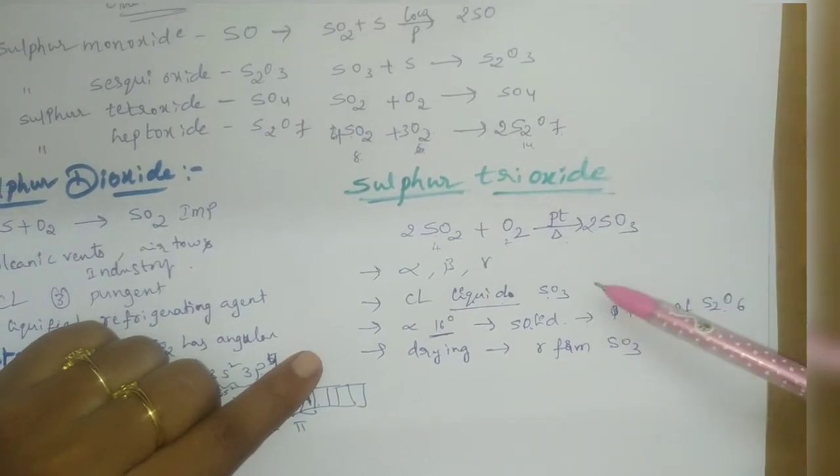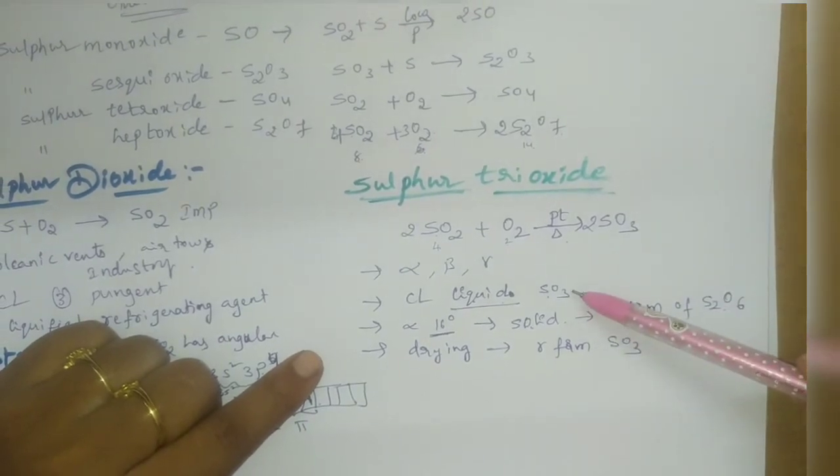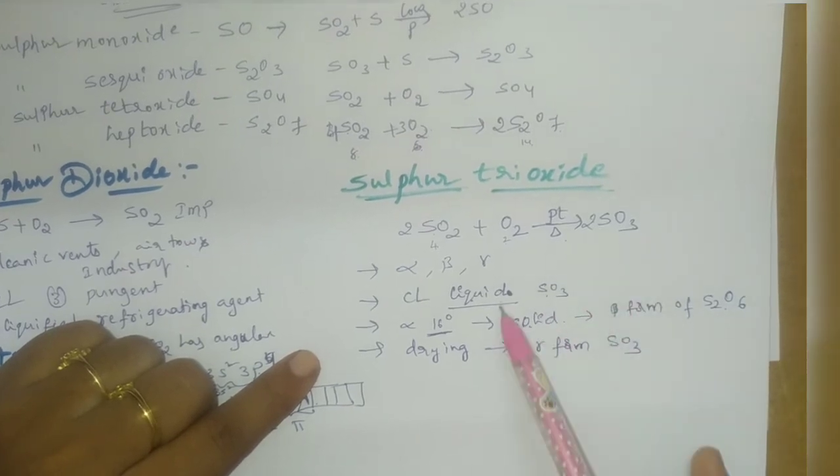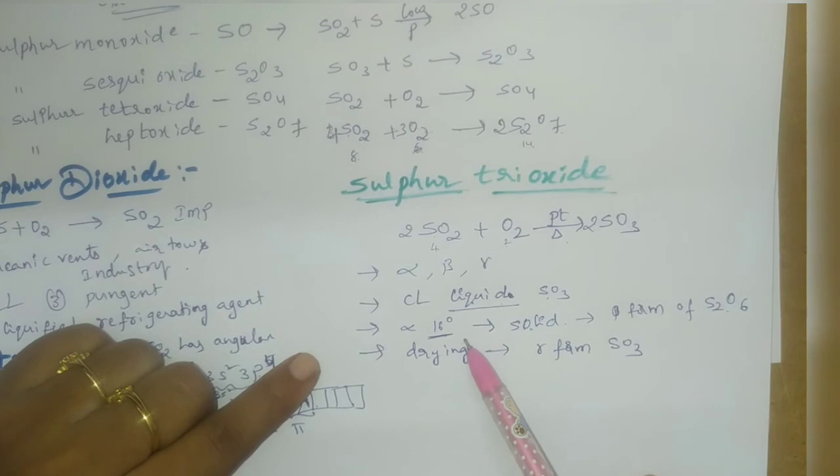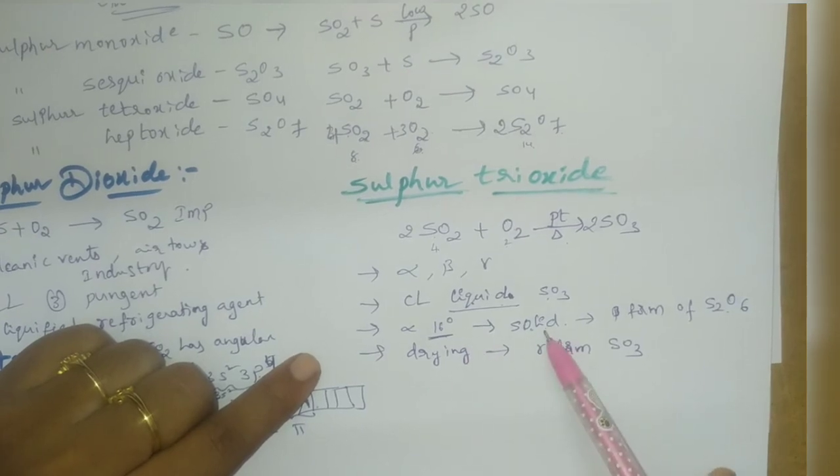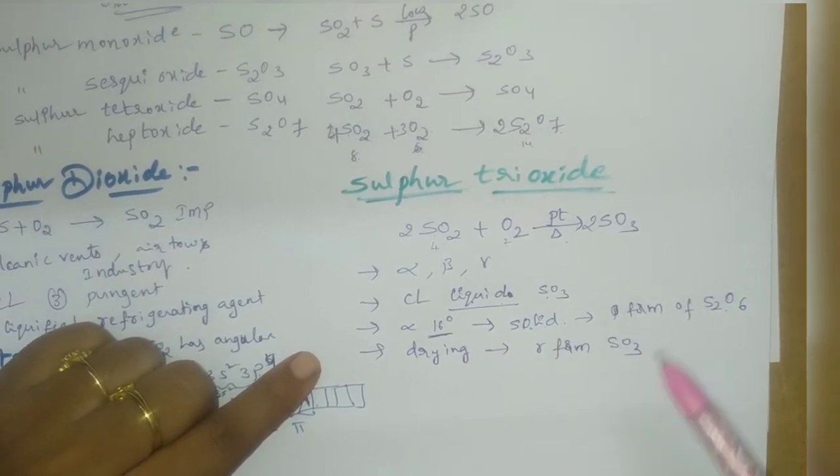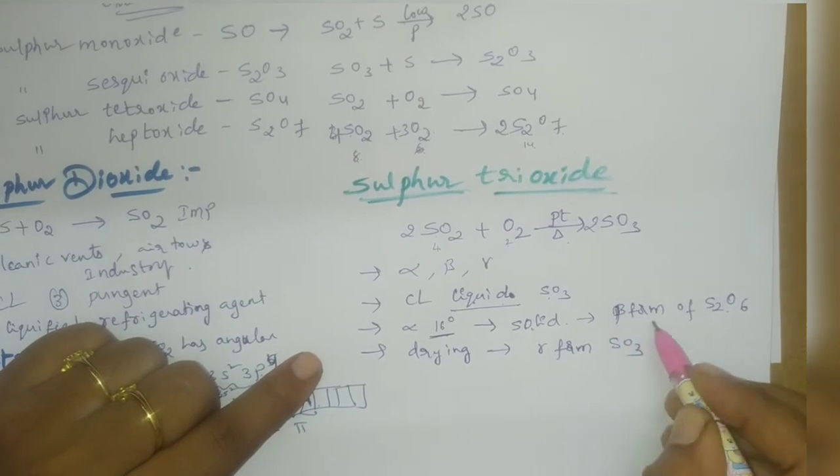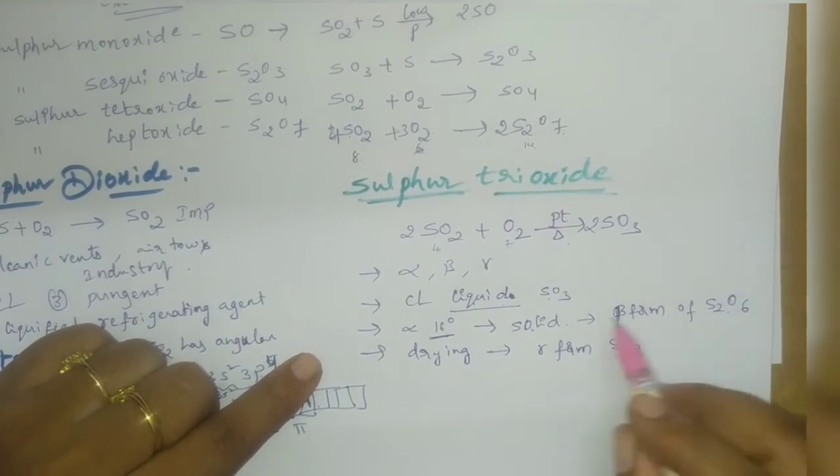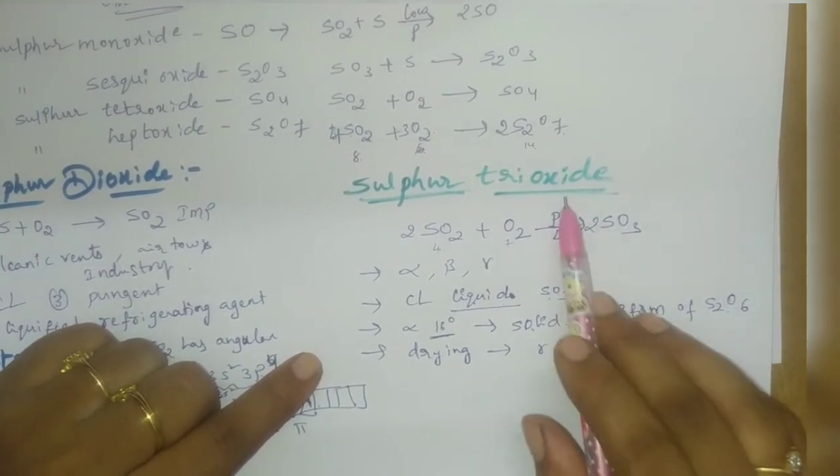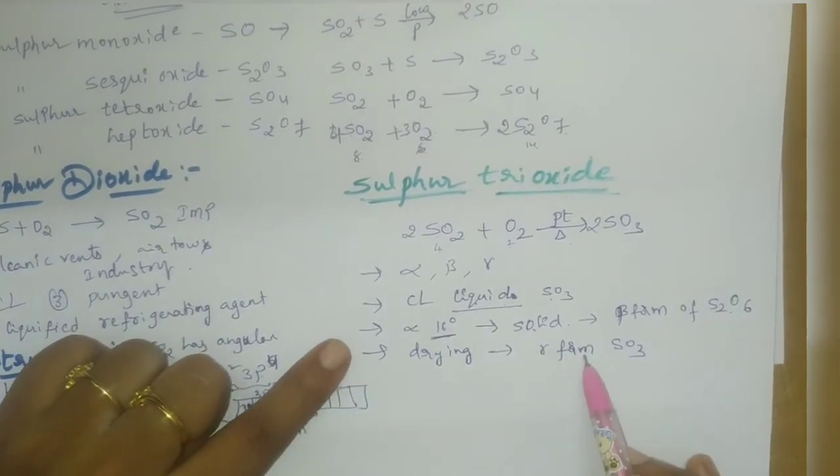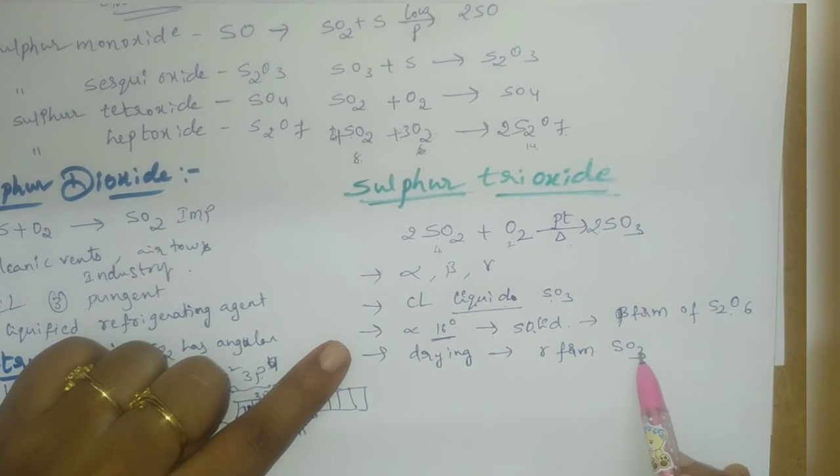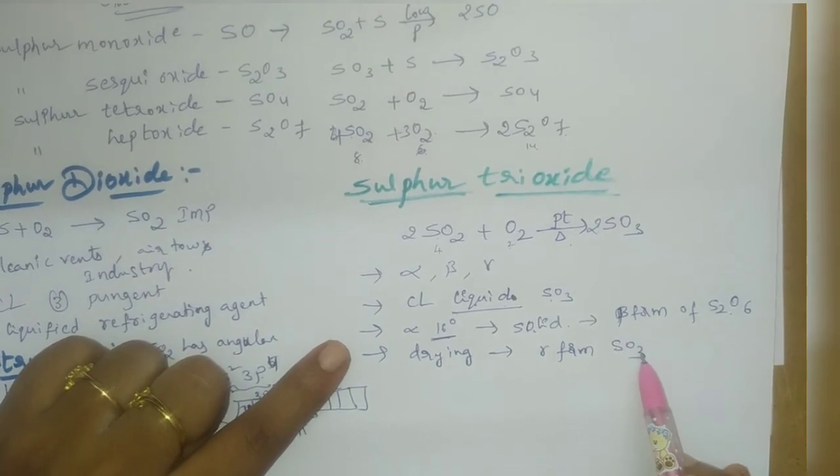Again it comes back to SO3 nature. So sulfur trioxide first exists in liquid state as colorless alpha form. At some temperature it converts to solid nature as beta form S2O6. Again, drying gives gamma form, which takes the original position of sulfur trioxide.